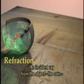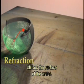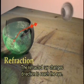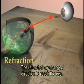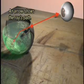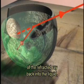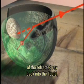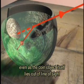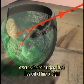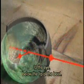An incident ray from the object, the coin, strikes the surface of the water. The refracted ray changes direction to reach the eye. The image of the coin lies on the extension of the refracted ray back into the liquid, even as the coin object itself lies out of line of sight to the eye, below the lip of the bowl.